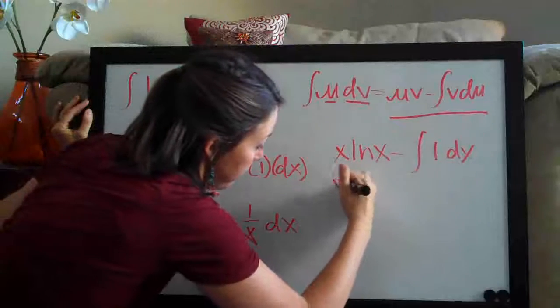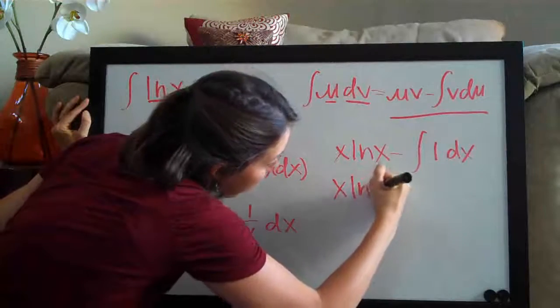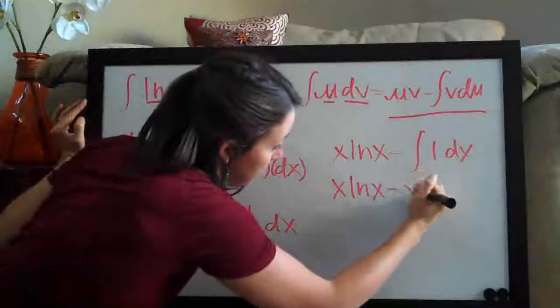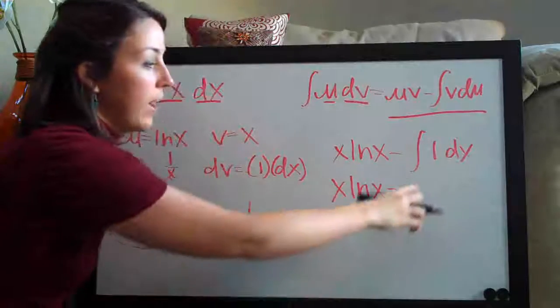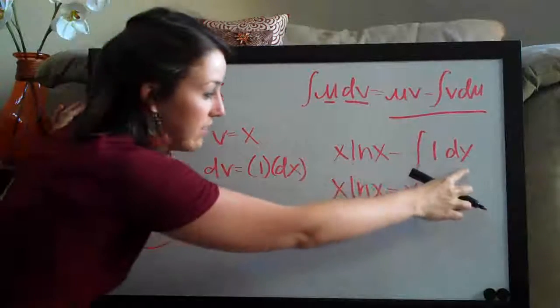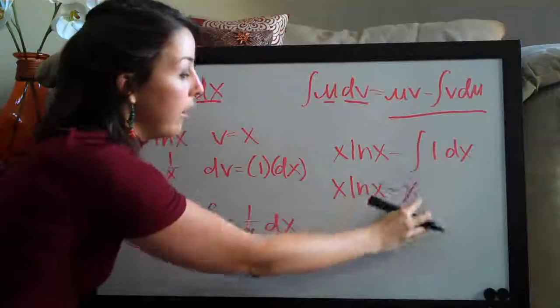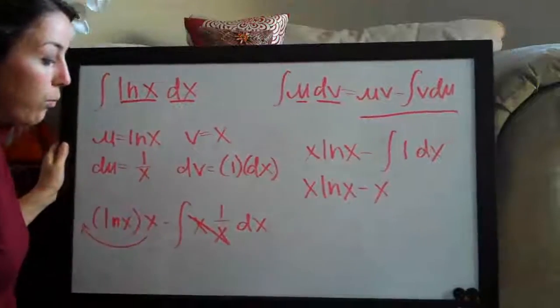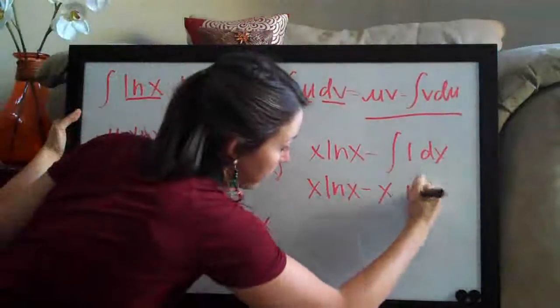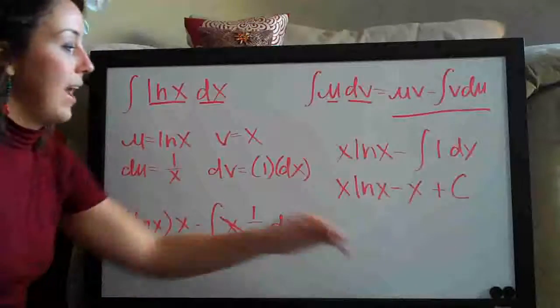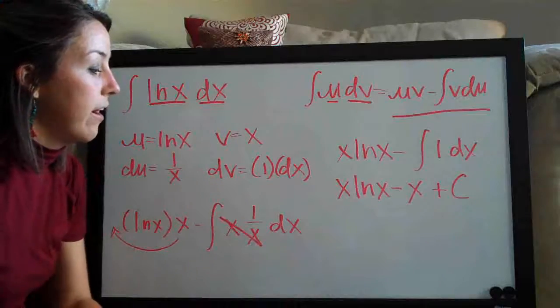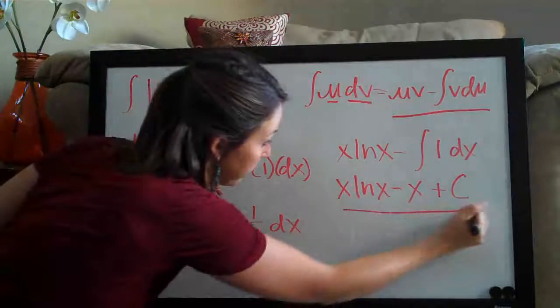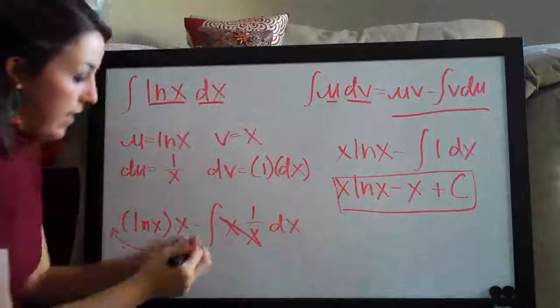And so then when we take the integral it's actually really simple. We get x ln of x minus the integral of 1 is just x. The dx drops away whenever you take the integral. The integral sign goes away and the dx goes away so really we just care about this 1. So the integral of that is x and then of course whenever we take an integral we always have to add c which stands for constant to account for a constant that may have been there and this actually ends up being our final answer here: x ln of x minus x plus c.